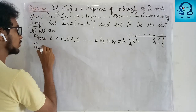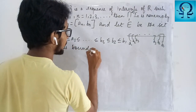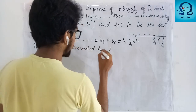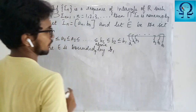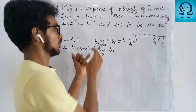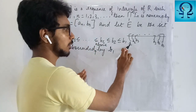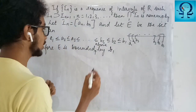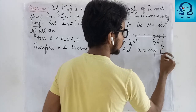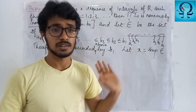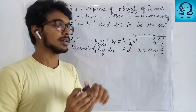Therefore, your set E is bounded above — bounded above by b_1. I don't know what the exact supremum is, but E is bounded above by b_1. And let me take x to be the supremum of E. I am taking the supremum of the set E to be x.